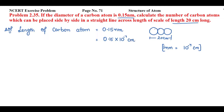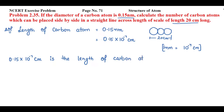Applying the unitary method: 0.15 into 10 raised to power minus 7 centimeter is the length of 1 carbon atom. We have to determine that 20 centimeter is the length of how many carbon atoms.